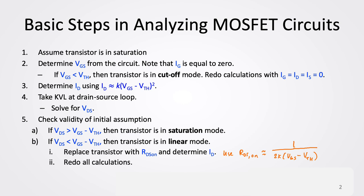Otherwise, if the computed VDS is less than VGS minus VTH, then the transistor is in the linear mode of operation. That means we need to redo calculations by replacing the transistor with RDS_on, using RDS_on equal to 1 over 2K times (VGS minus VTH). We then determine ID and redo the calculation for VDS.